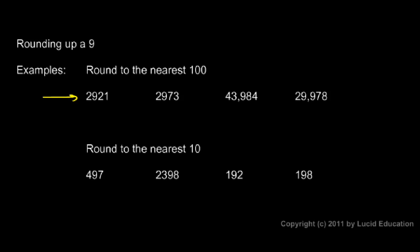In this row we're told to round these numbers to the nearest hundred. So this first example is pretty straightforward. 2,921, we find the hundreds place, that's a 9, we look at the next number, that number is less than 5, so we round down. The answer is 2,900.